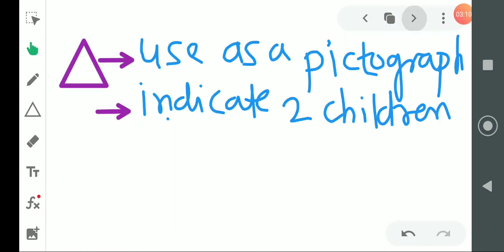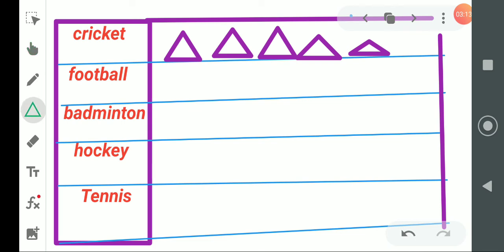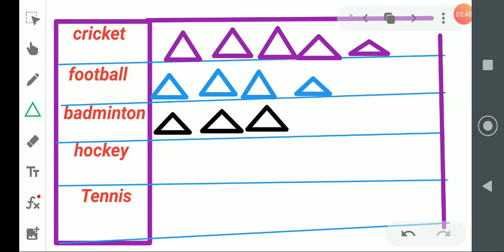And this became ten. So we have to draw this pictograph as a sign for the eight children. Eight children, we made the pictograph for them. Next badminton, how many children like it? Badminton is liked by six students. Again we should change the color here and then two children this is four and this is six children.